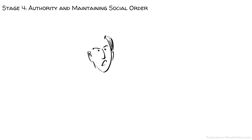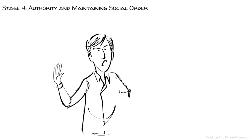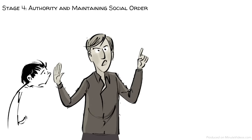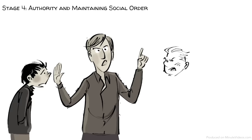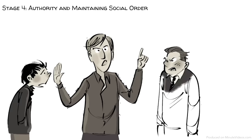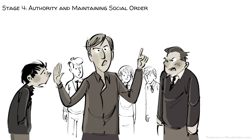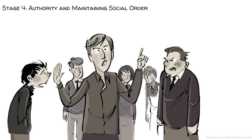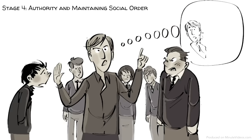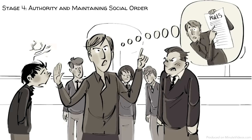At stage four, we value authority and want to maintain social order. When the teacher sees the group fighting, he immediately steps in and shouts: stop, fighting at school is forbidden. He feels that, above all, it is important to follow the rules, otherwise chaos breaks out. He feels it is his duty to uphold the rules that sustain a functioning society. He asks himself: how can I maintain law and order?